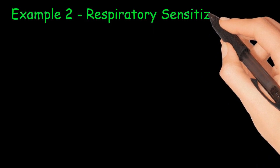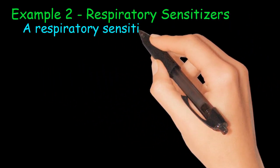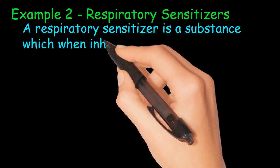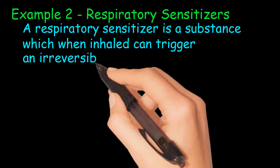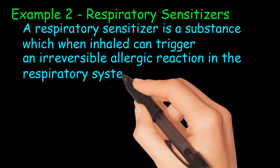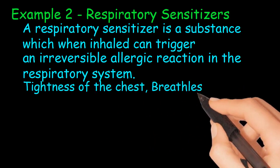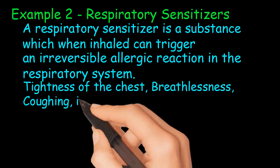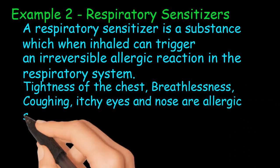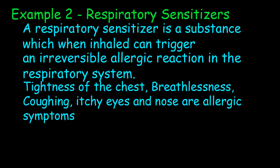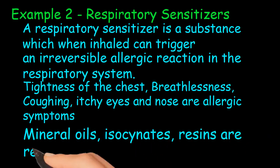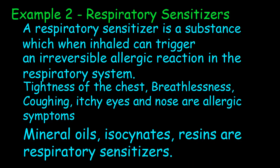Example 2: Respiratory Sensitizers. A respiratory sensitizer is a substance which, when inhaled, can trigger an irreversible allergic reaction in the respiratory system. Symptoms include tightness of the chest, breathlessness, coughing, and itchy eyes and nose. Breathing in these substances may irritate and cause damage to the nose, throat, and lungs. Examples of respiratory sensitizers include mineral oils, isocyanates, and resins.